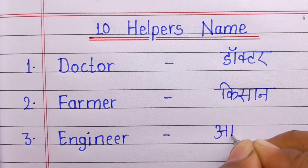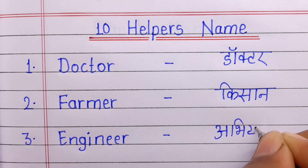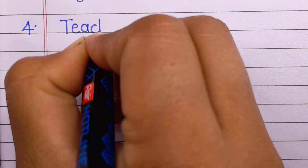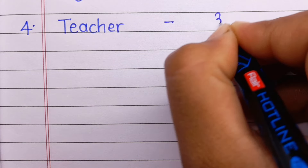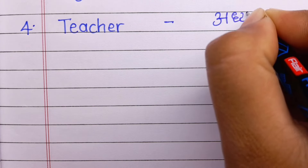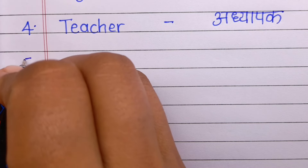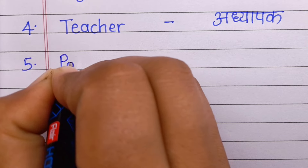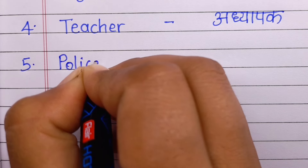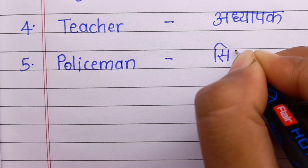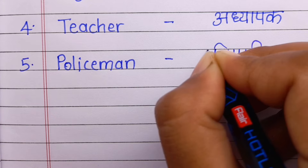Number 3: Engineer. Engineer means abhiyanta. Number 4: Teacher. Teacher means adhyapak.